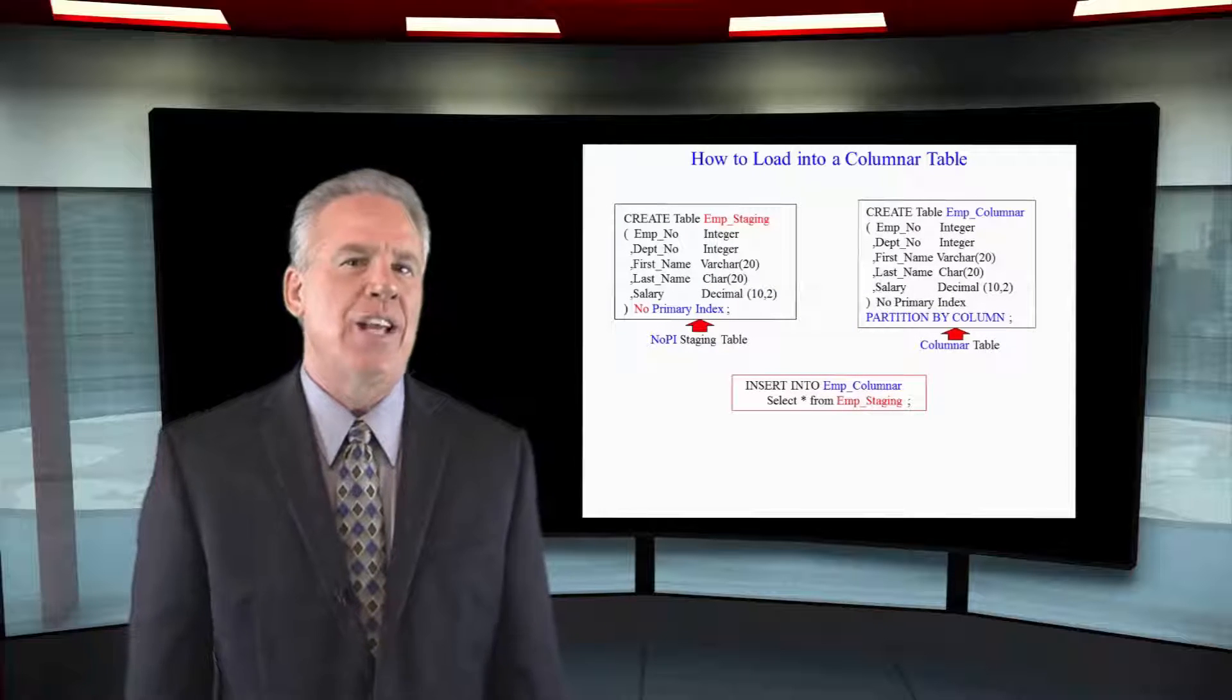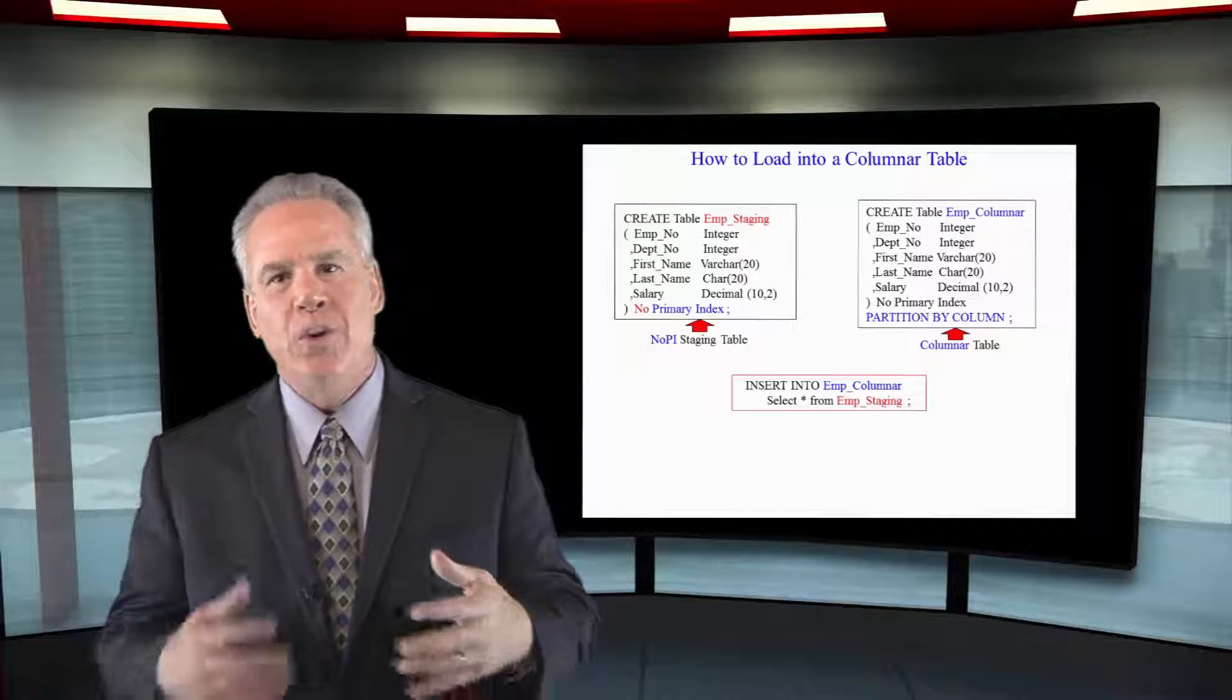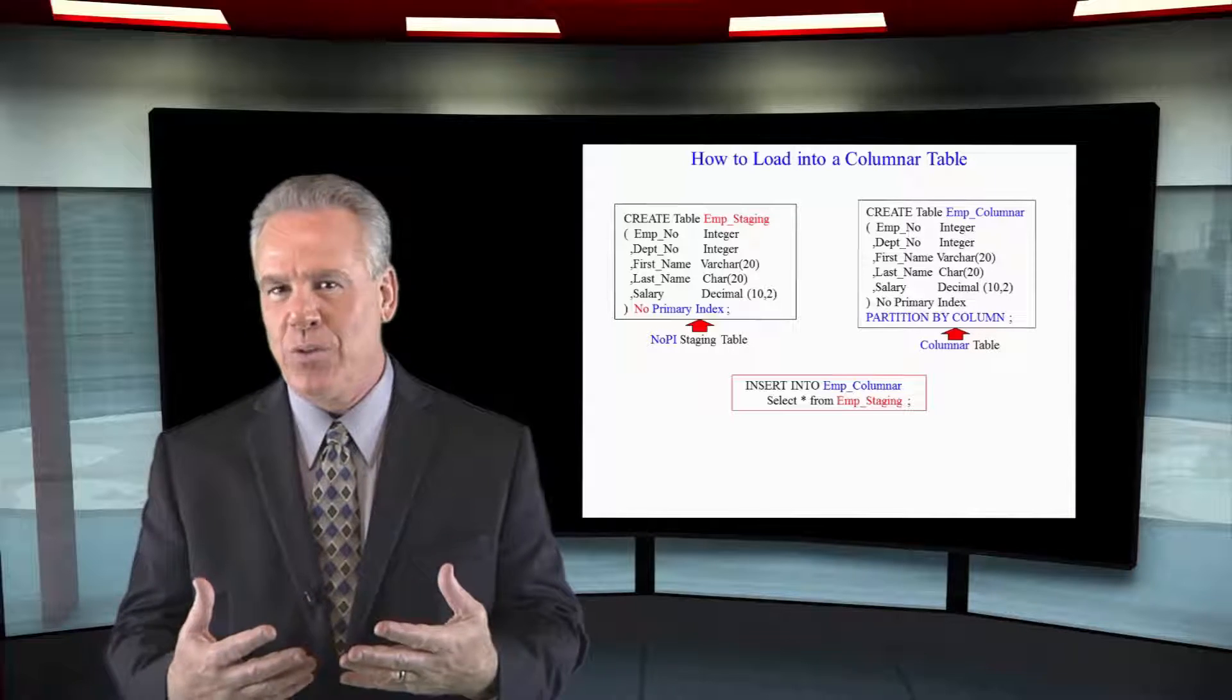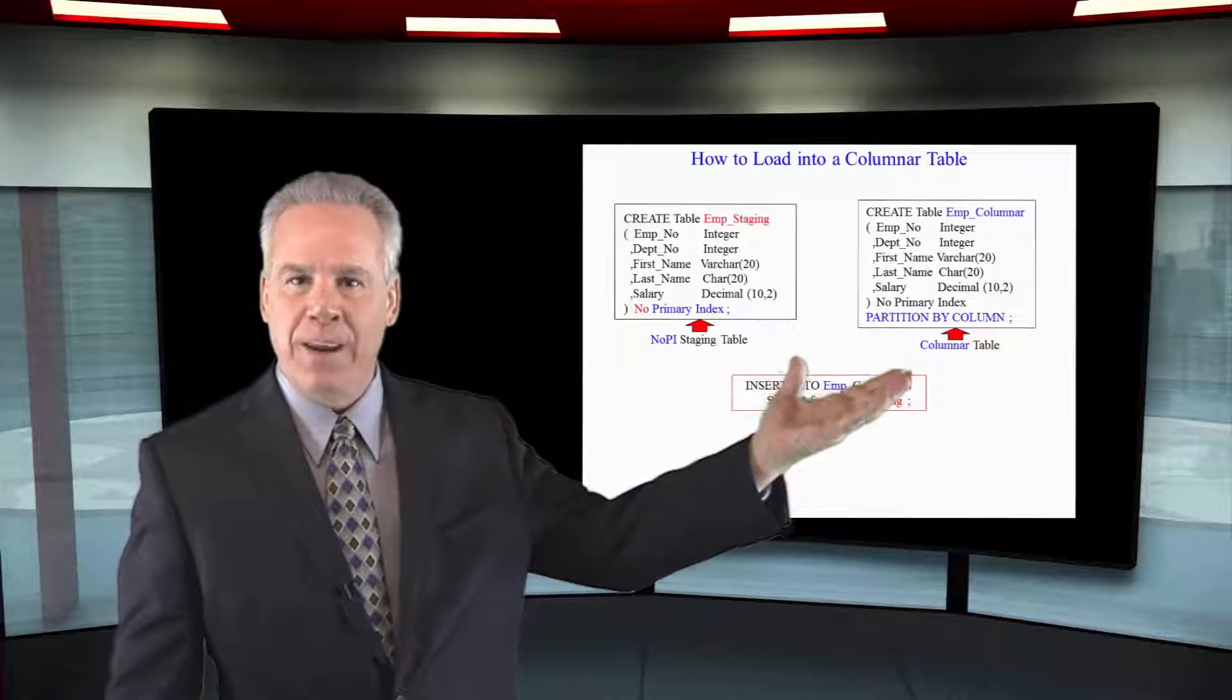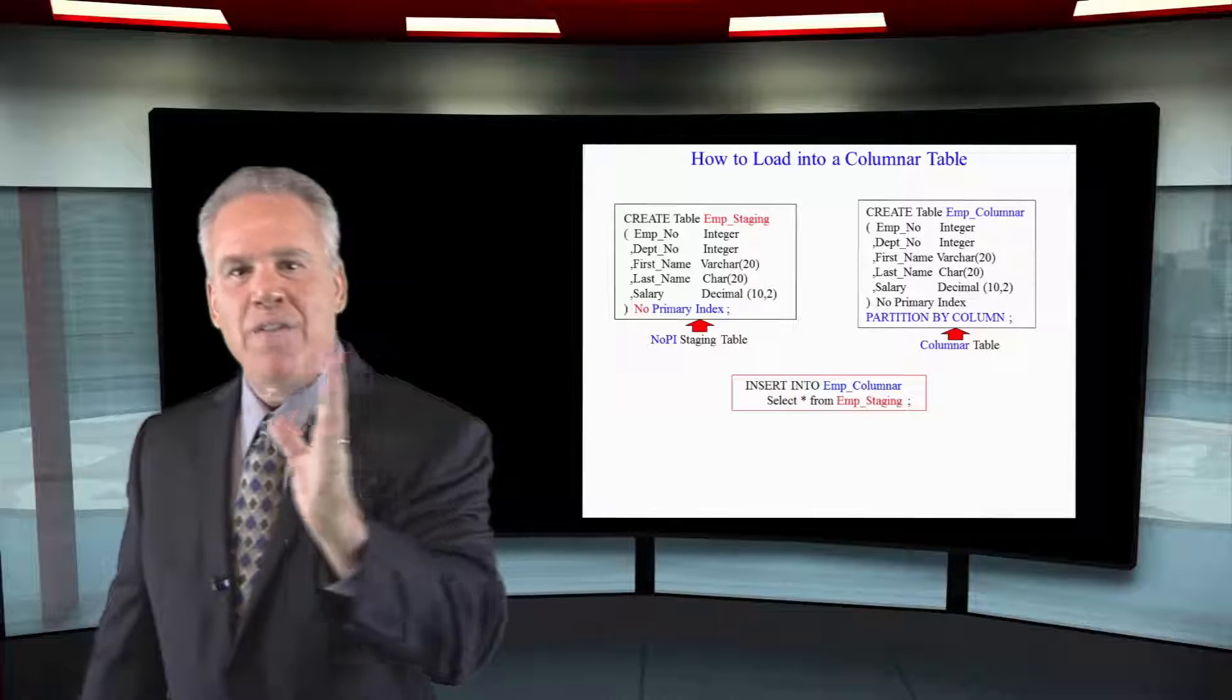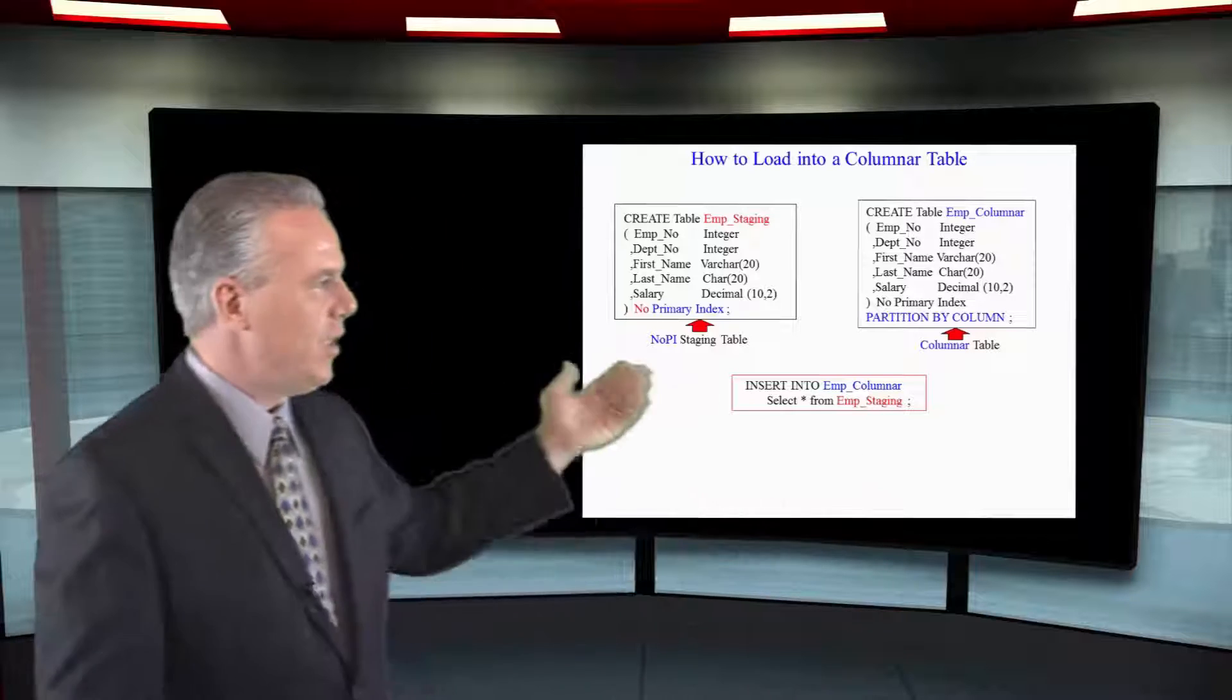Don't load data from an outside source directly into a columnar table. You do it into a staging table. So it's a two step process. Let's say we're taking something from the mainframe and we want to load it eventually to our columnar table. So we create a staging table.